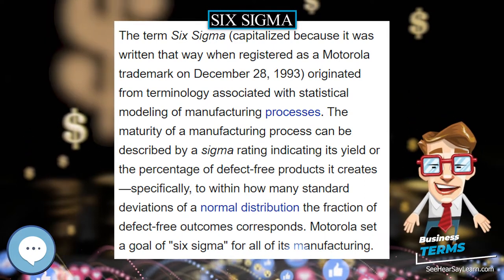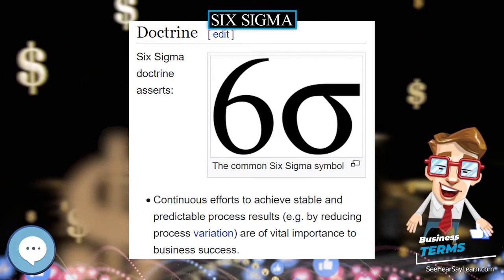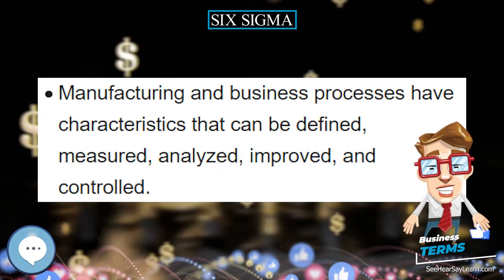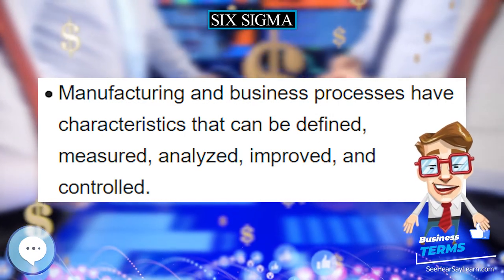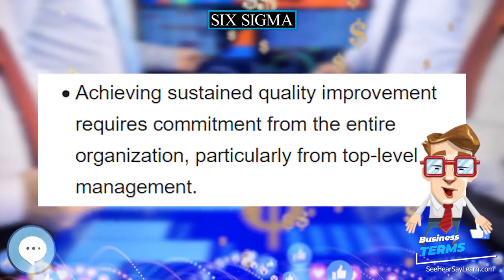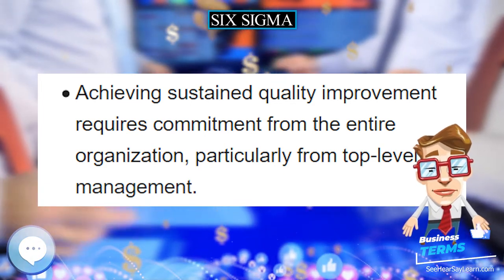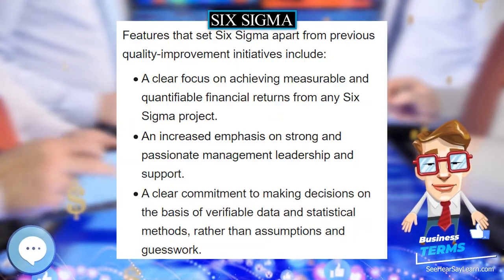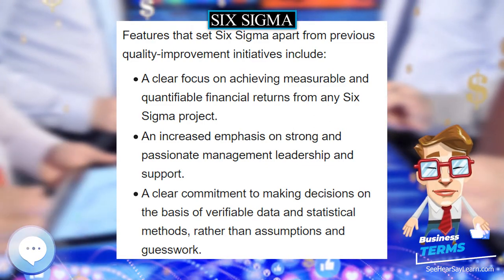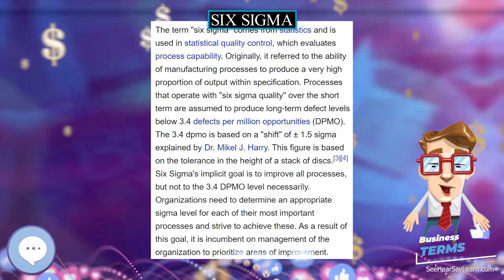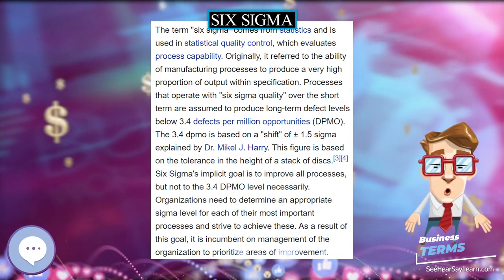Six Sigma strategies seek to improve the quality of the output of a process by identifying and removing the causes of defects and minimizing variability in manufacturing and business processes. It uses a set of quality management methods, mainly empirical and statistical methods, and creates a special infrastructure of people within the organization who are experts in these methods.